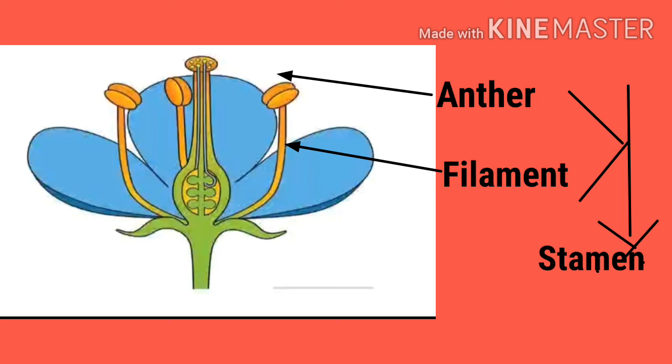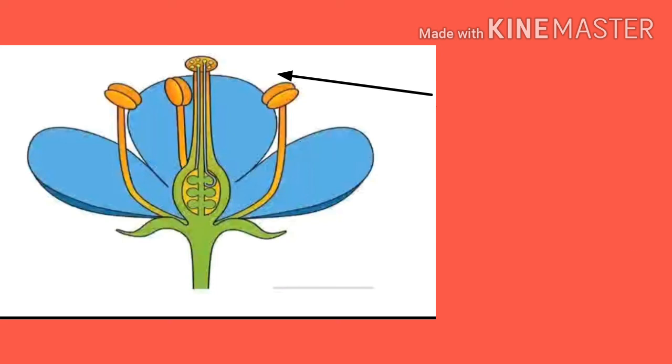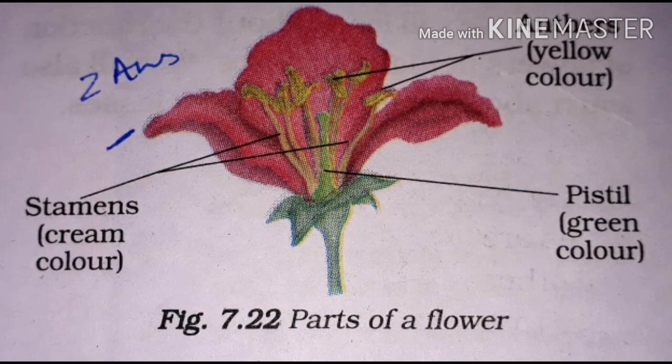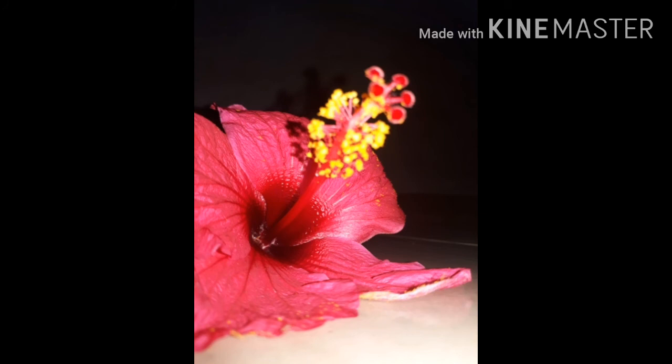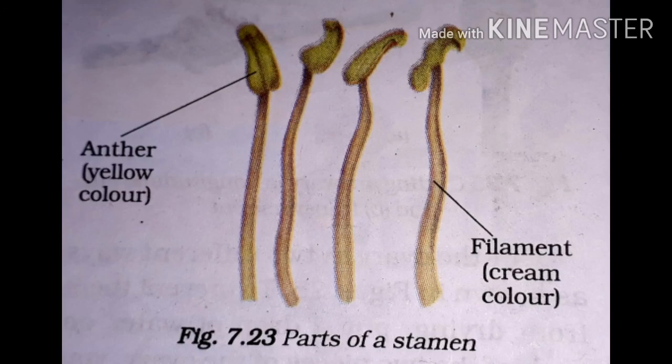The main parts are stamens and pistil. The stamen is the male reproductive part and pistil is the female reproductive part. You can see different kinds of stamens present in different flowers. Can you recognise the two parts of the stamens in this flower?